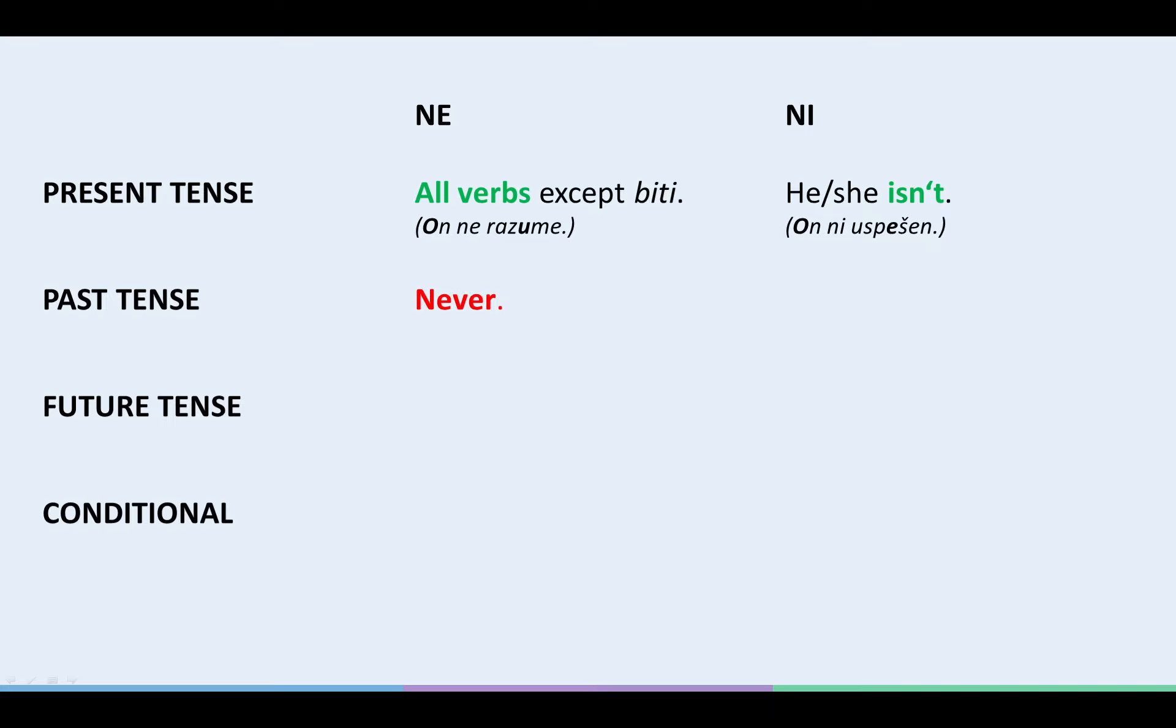In the past tense, we never use NE to negate verbs. How come? Well, because we form the past tense with the present tense of the verb TO BE, and we never negate TO BE in the present with NE, since it's an exception. For example, jaz nisem razumel. I didn't understand.